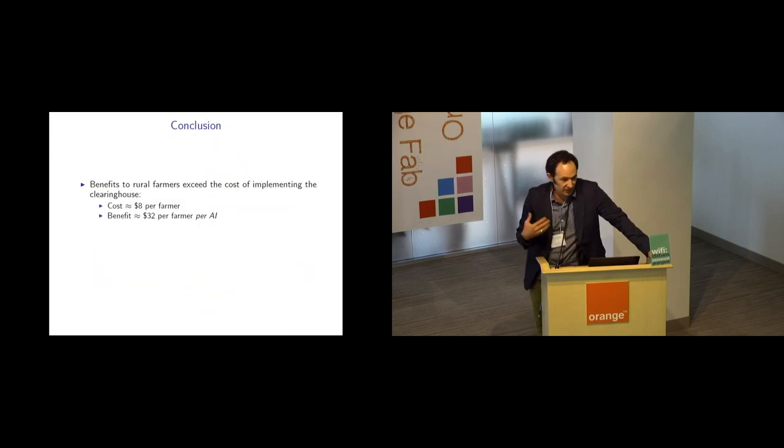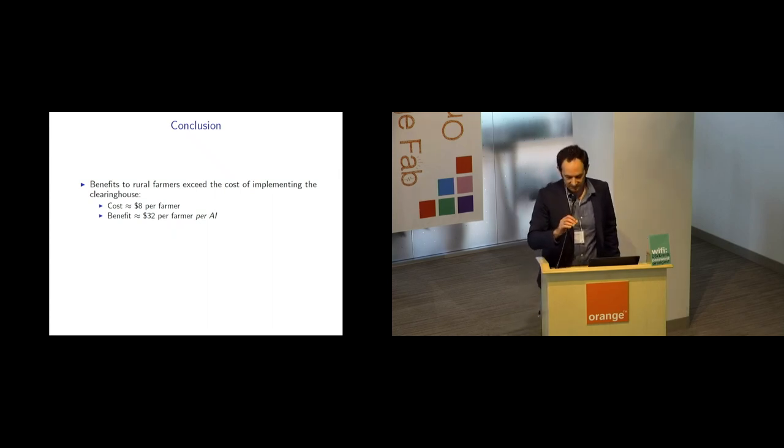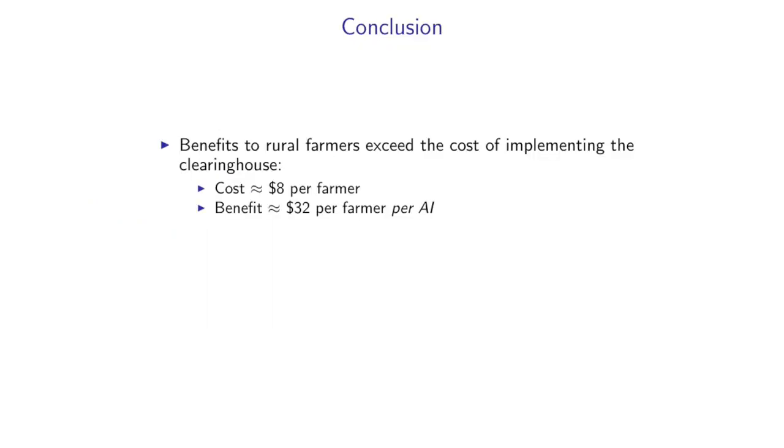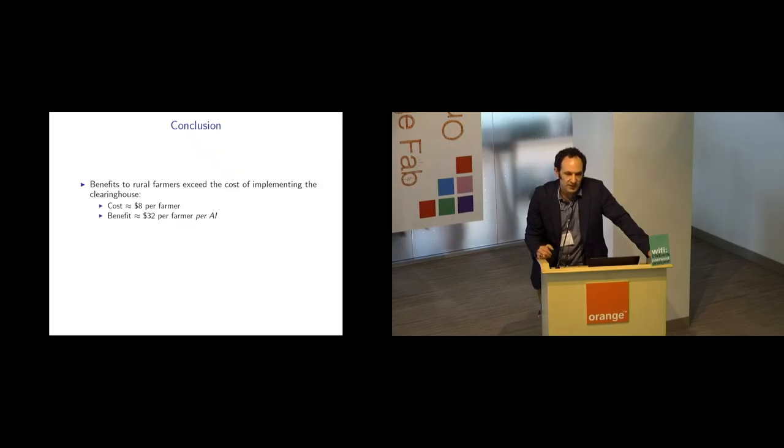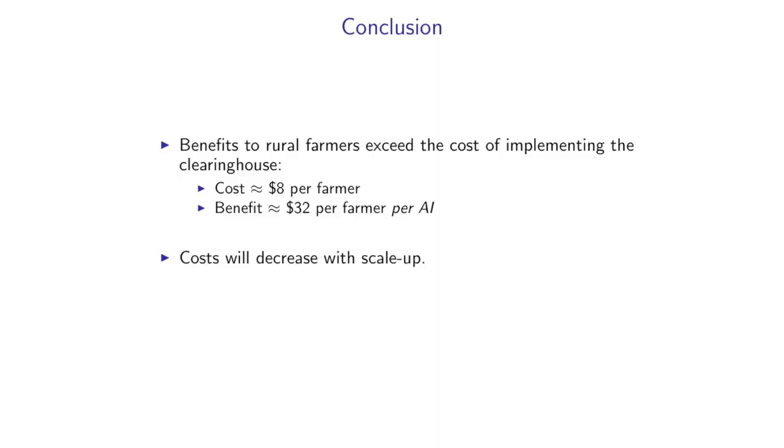So if we take this and we put it in dollar terms, we can estimate the value of an increased stream of calves to these households. For the life cycle of your cow, now you're gonna get milk a little sooner and the next calf a little sooner, and that's gonna snowball. So the real value to this household in expected income terms is about $32. The cost of reaching each of these farmers was eight bucks, including all the fixed costs of developing this system, which were essentially all of the cost. The marginal cost of each phone call was pennies.